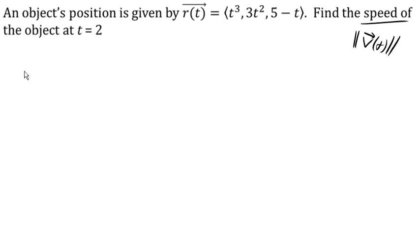Okay, so first thing we need is the velocity function, which would be the derivative of the position function. So let's start with that. Derivative of our position function here: 3t squared, 6t, and a minus 1.